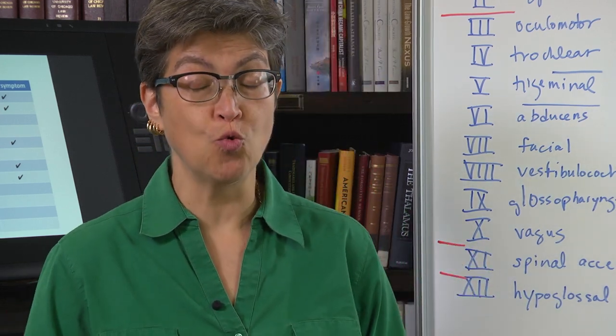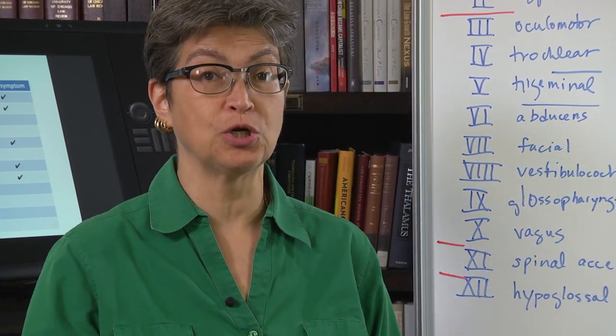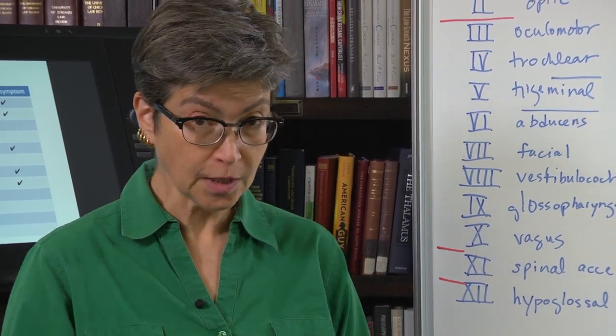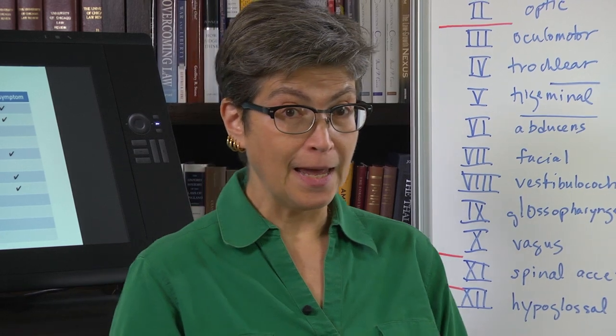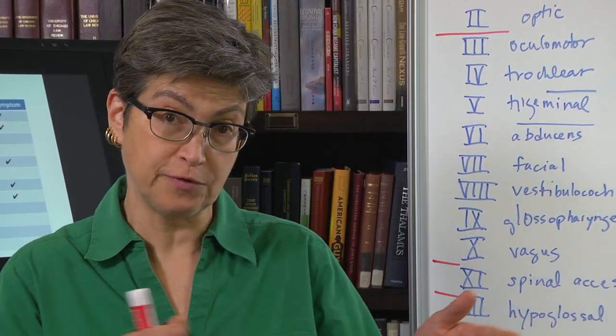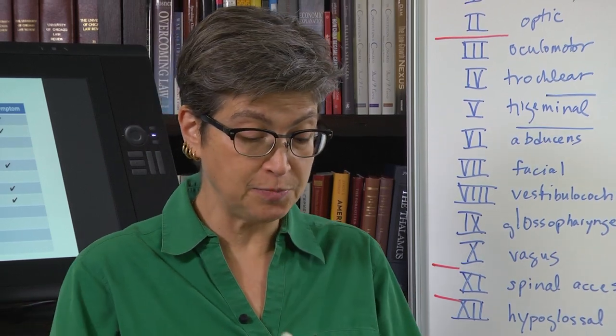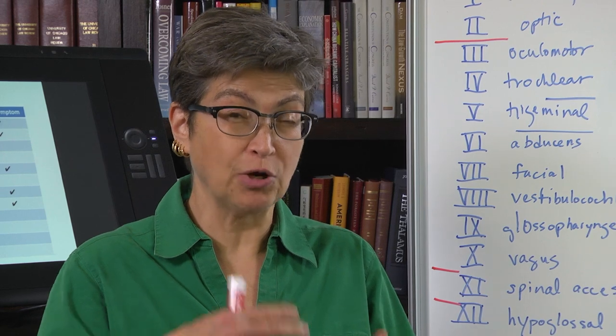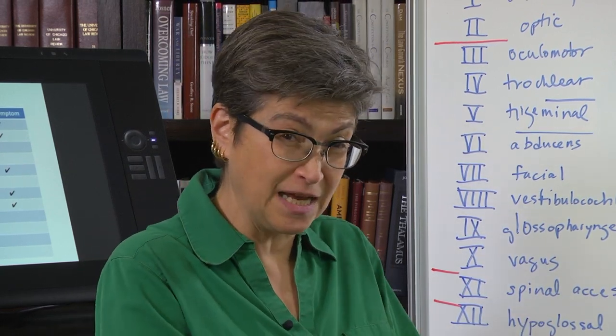So now we're going to talk about what are the symptoms that occur when the cranial nerves are damaged or lesioned. And they are going to split into these two general categories of positive signs and negative signs. Negative signs being paralysis, deafness, blindness, et cetera. A loss of a function, that's a negative sign.